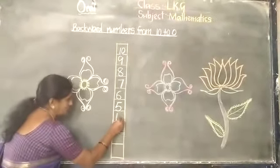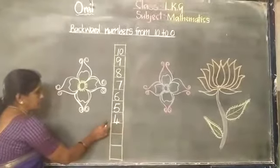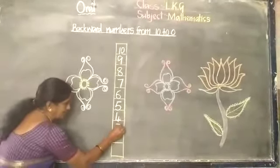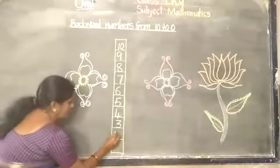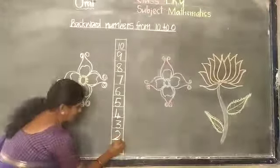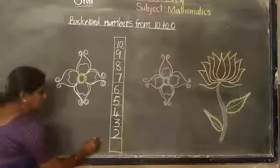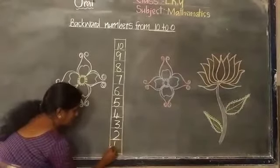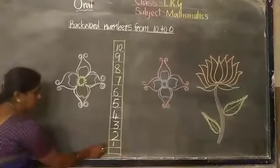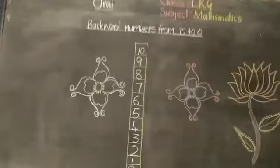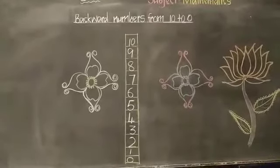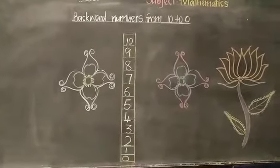What comes before 4? 3. What comes before 3? 2. Good children. Very good children. Okay children, practice backward numbers.